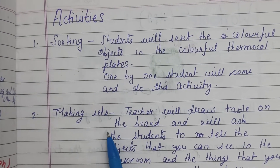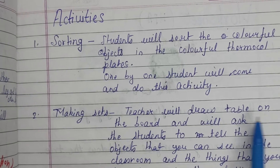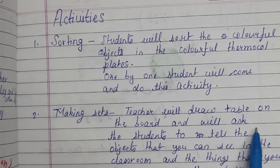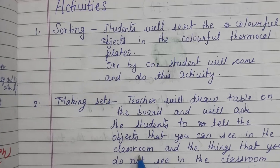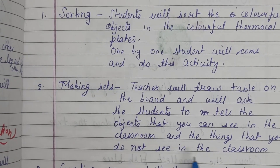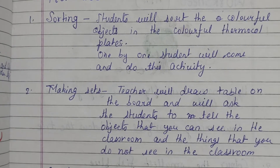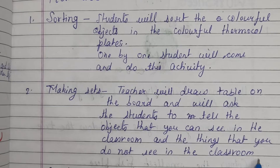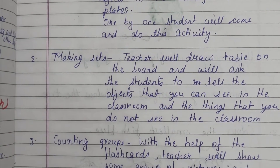For making sets, the teacher will draw a table on the board and will ask the students to name the objects they can see in the classroom and the things they do not see in the classroom. Students will tell what things they can and cannot see.